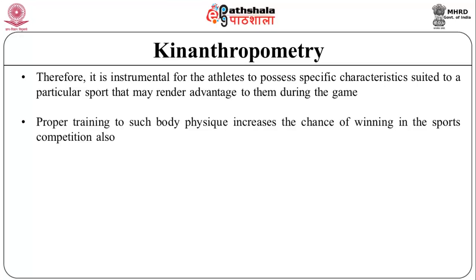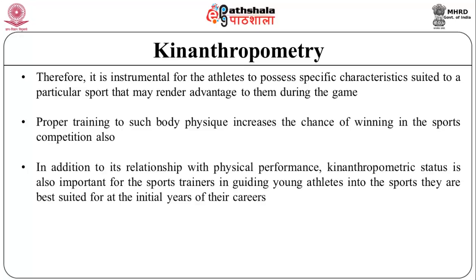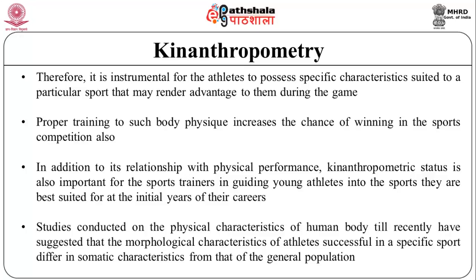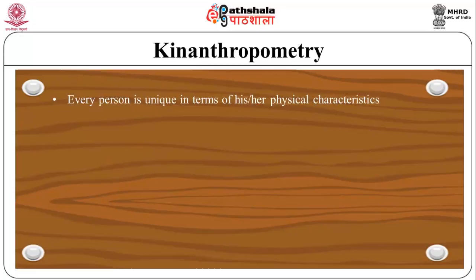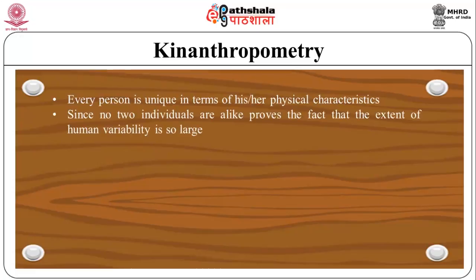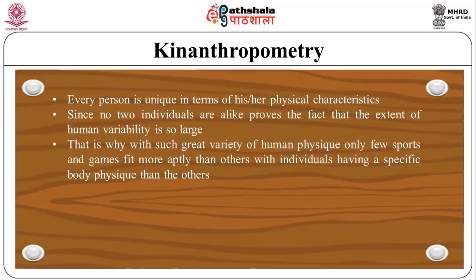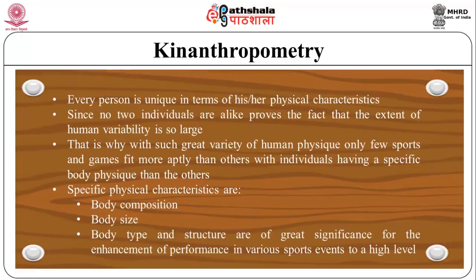Kinanthropometric status is also important for sports trainers in guiding young athletes into the sports they are best suited for at the initial years of their careers. Studies on physical characteristics of the human body have suggested that morphological characteristics of athletes successful in a specific sport differ in somatic characteristics from the general population. Every person is unique in terms of physical characteristics. With such great variety of human physique, only few sports and games fit more aptly with individuals having a specific body physique. Specific physical characteristics like body composition, body size, body type and structure are of great importance for enhancing performance.